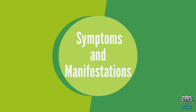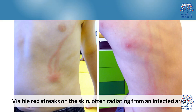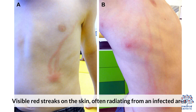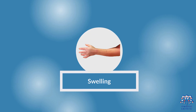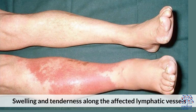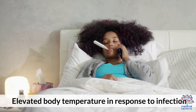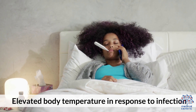2. Symptoms and Manifestations. Recognizing the symptoms of lymphangitis is crucial, including: Red Streaks — visible red streaks on the skin, often radiating from an infected area; Swelling — swelling and tenderness along the affected lymphatic vessels; and Fever — elevated body temperature in response to infection.